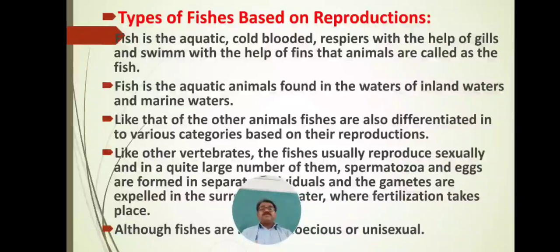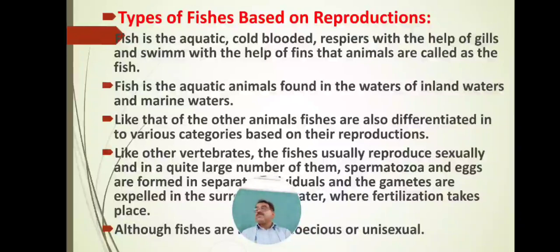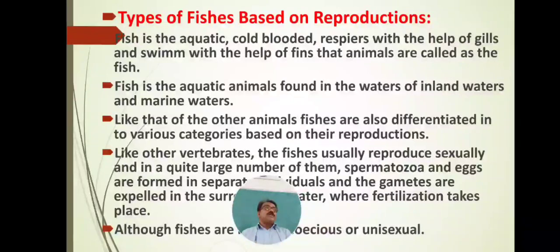Types of fishes based on reproduction. Fish is the aquatic, cold-blooded animal that breathes with the help of gills and swims with the help of fins. That animal is called a fish. Fish is aquatic — living in water. That may be fresh water, marine water, or brackish water. Fish is cold-blooded, meaning it does not change its body temperature according to the surrounding environment.